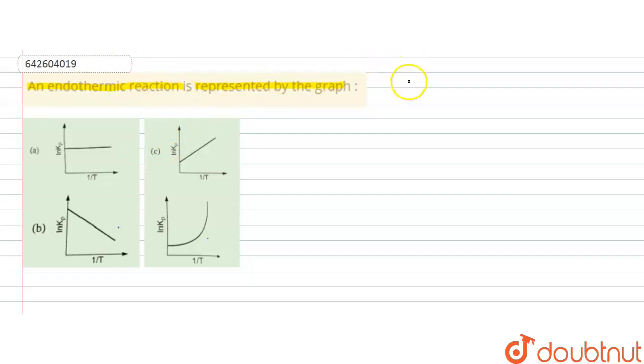So first of all, we will derive the relation between ln Kp versus 1 by T.